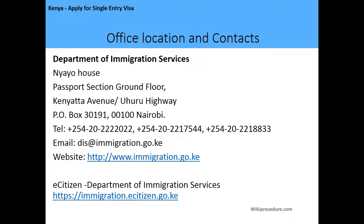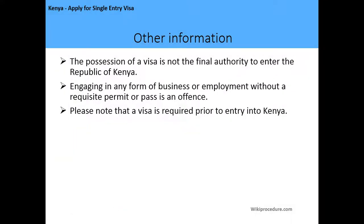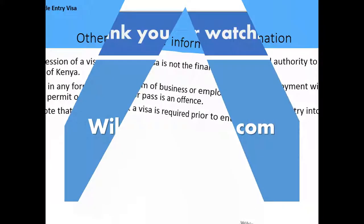The office location and contact information of the Department of Immigration: they are located at Nyayo House in Nairobi, Kenya. You can visit them through their website at www.immigration.go.ke, or through their eCitizen platform at www.immigration.ecitizen.go.ke. Other important information: possession of a visa is not the final authority to enter the Republic of Kenya. Engaging in any form of business or employment without a requisite permit or pass is an offense. Please note that the visa is required prior to entry into Kenya.